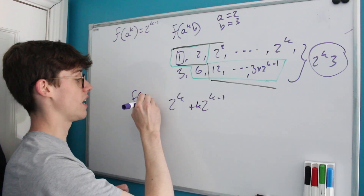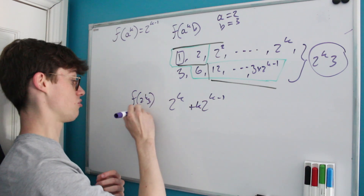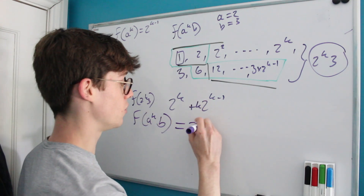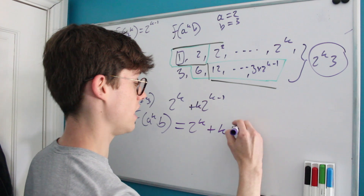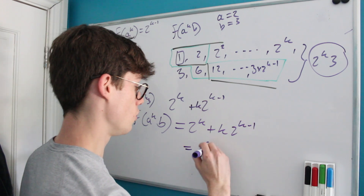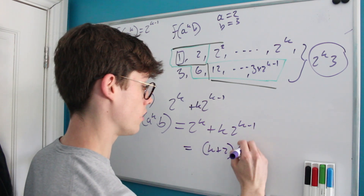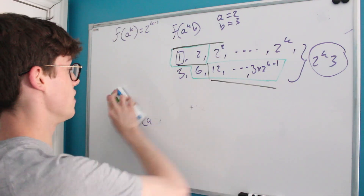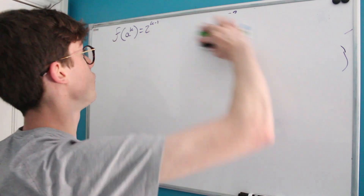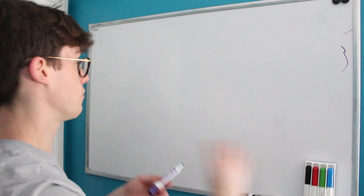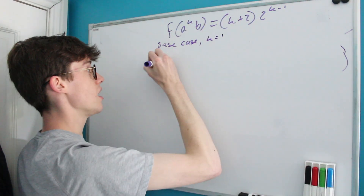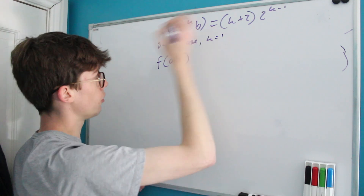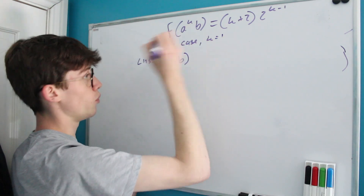So our conjecture is f(a^k · b) = 2^k + k · 2^(k−1) = (k + 2) · 2^(k−1). Now let's prove this by induction. Base case k = 1: f(ab) = f(a) + f(b) + f(1) = 1 + 1 + 1 = 3. On the right: (1 + 2) · 2^0 = 3. The base case holds.